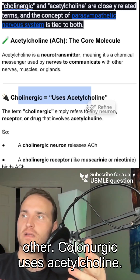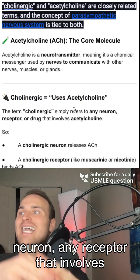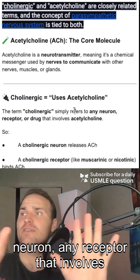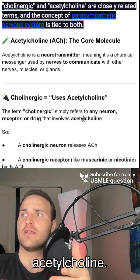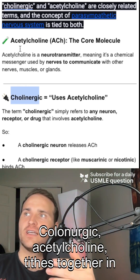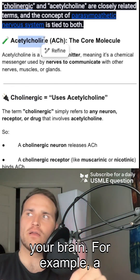Cholinergic uses acetylcholine. So basically, cholinergic means any neuron or any receptor that involves acetylcholine. Tie cholinergic and acetylcholine together in your brain.